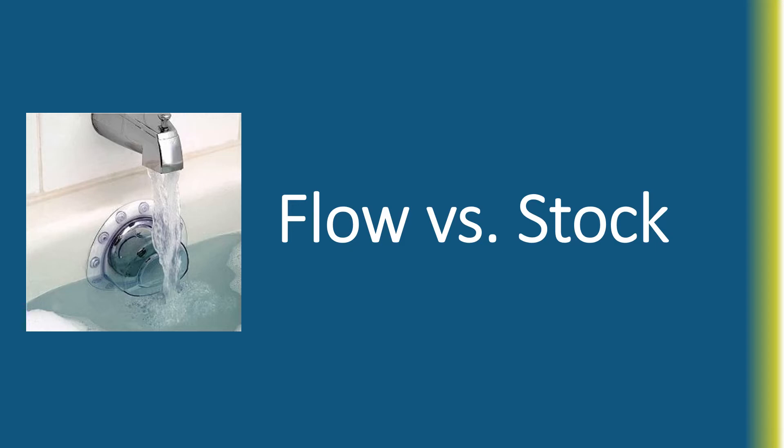So GDP is designed to measure the amount of production generated during a time period and not the total wealth of the economy — how much stock has accumulated. GDP is like a meter that keeps track of production, or of the flow coming out of the faucet, not a total measure of the amount of wealth or exchanges that have already taken place and been built up over time.